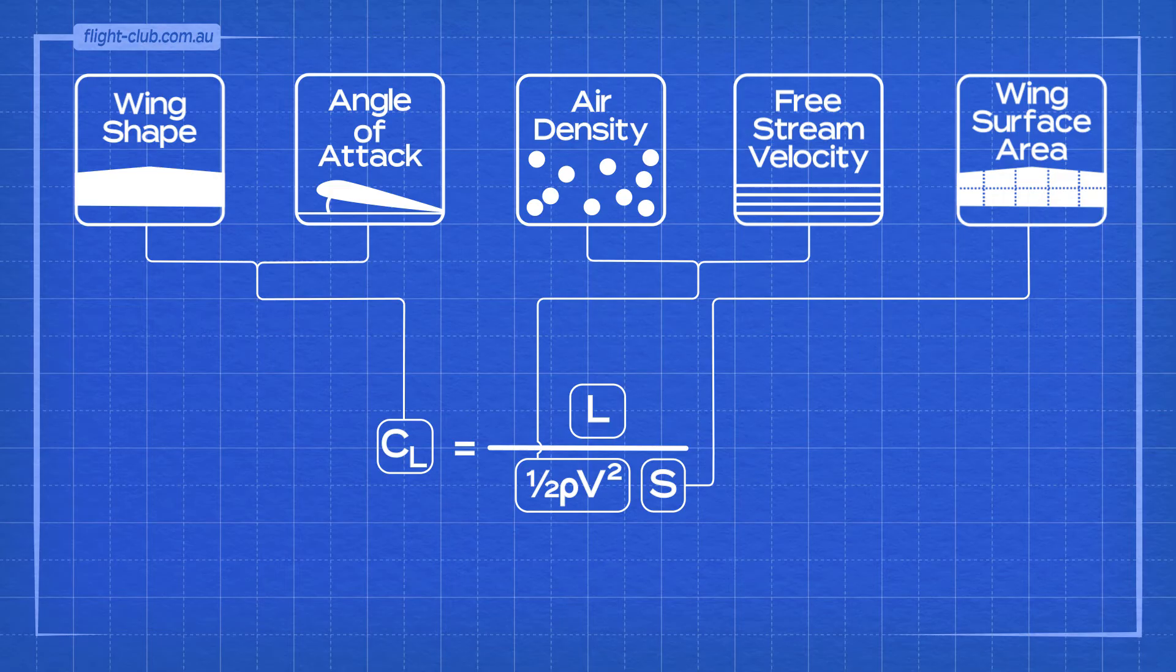Let's rearrange the lift formula to determine the coefficient of lift. Now let's take a slice of a wing shape and run a wind tunnel experiment on it. In the wind tunnel, this is what we can measure.